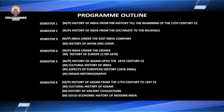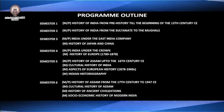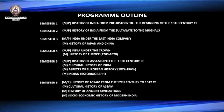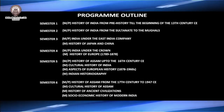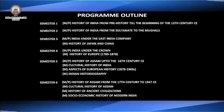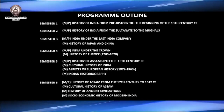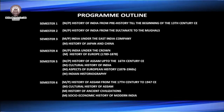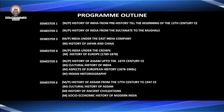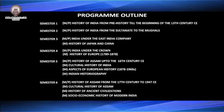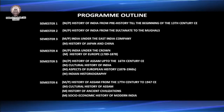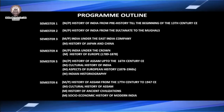In semester one, we have one paper: the history of India from prehistory till the beginning of the 15th century CE. In the second semester, there is one paper again — history of India from the Sultanate to the Mughals. The third semester has two papers: India under the East India Company, and history of Japan and China. In semester four, there are again two papers: India under the Crown, and history of Europe from 1789 to 1878.